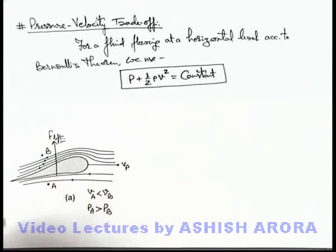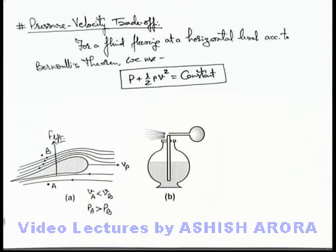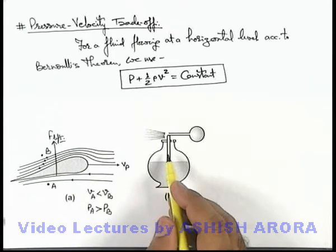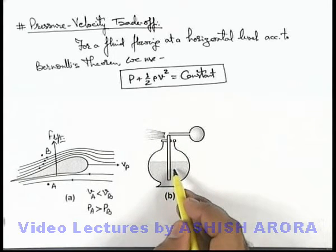Similarly we can discuss one more application for this pressure velocity trade-off. Here you can see this is an atomizer using which we can spray any liquid filled in it.